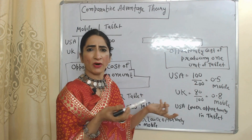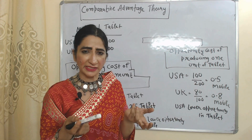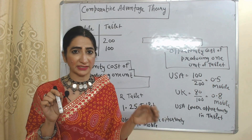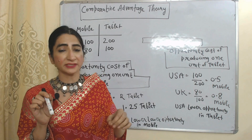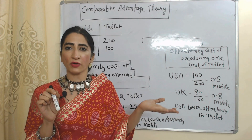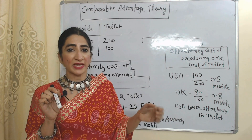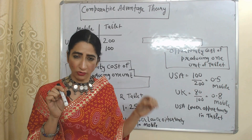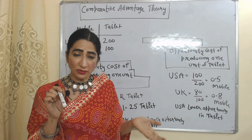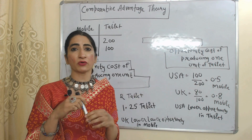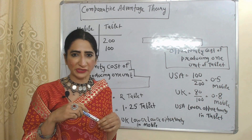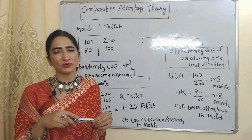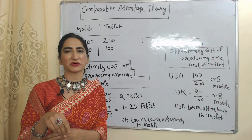And this is all about comparative advantage theory. According to this theory, trade should be based on comparative advantage. We can receive comparative advantage by producing goods at lower opportunity cost. We should increase production and export of those goods in which we have lower opportunity cost, and reduce production and increase import of those goods in which we have higher opportunity cost. So this is all about theories of international trade.